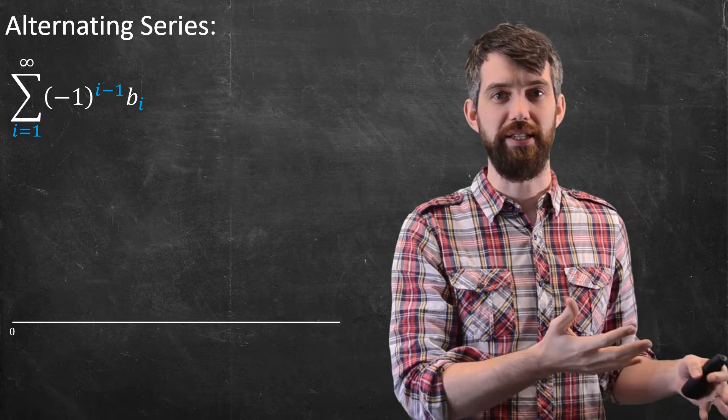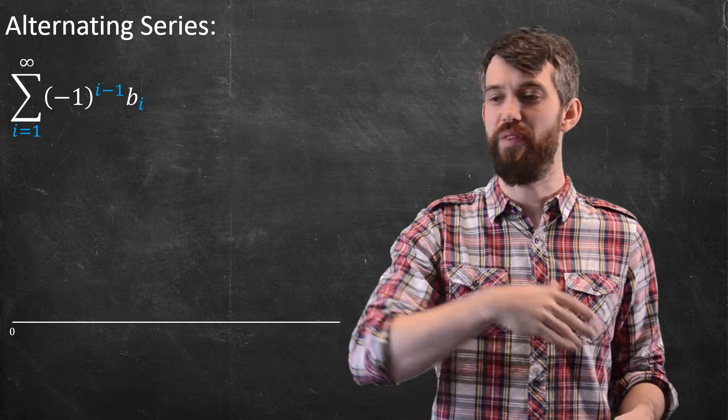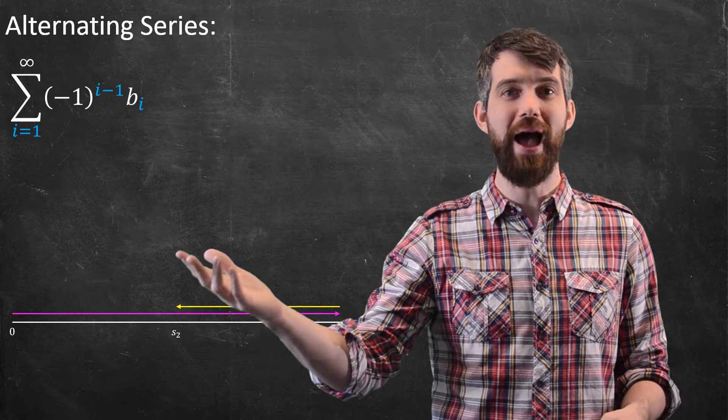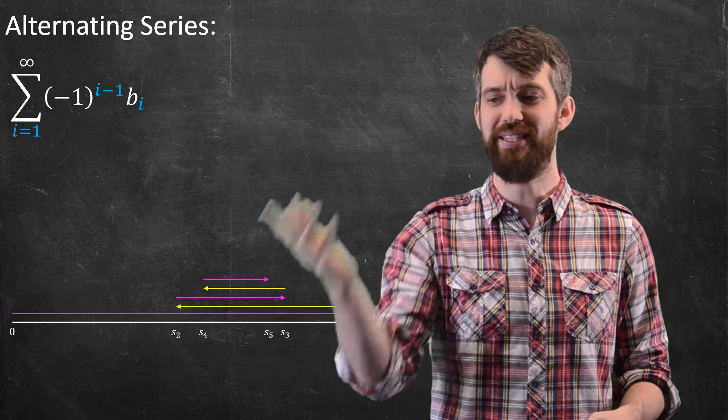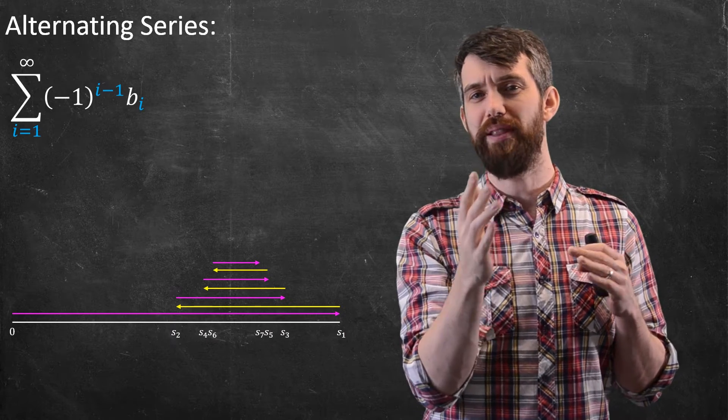In my first video on alternating series, we saw that if I put down the number line, there was this sort of back and forth behavior, where s1 was going to go all the way out, and then s2 was going to go back in, and then s3 was going to go out, and s4 back in, and s5 out, and s6, and s7, and it just went back and forth like that.